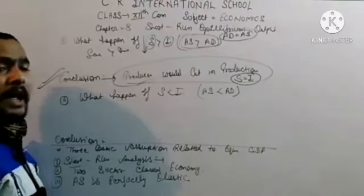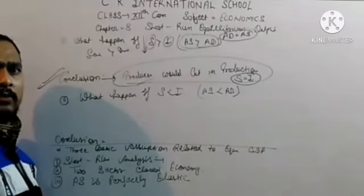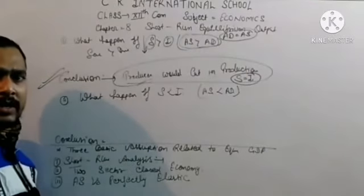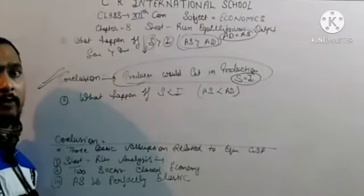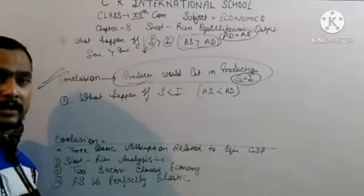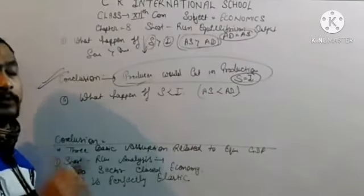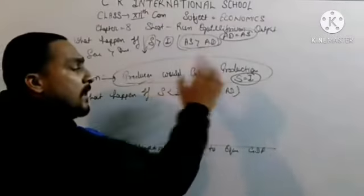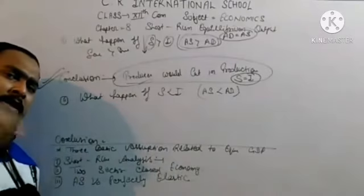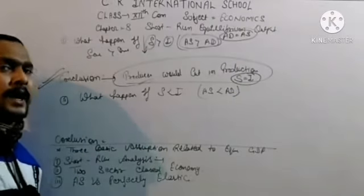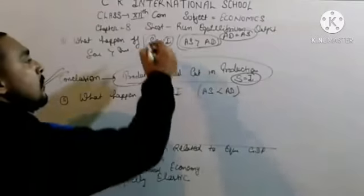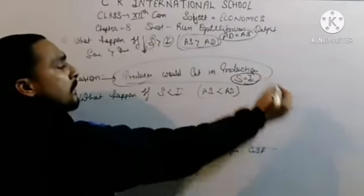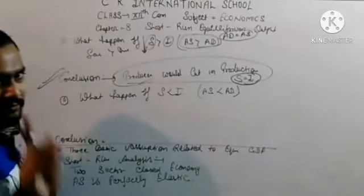Summary of case one: When S is greater than I, people save more and spend less. The producer's extra stock is unsold (undesired inventory). The producer reduces production next time; income decreases, so people save less, and saving keeps falling until S equals I - equilibrium is restored.